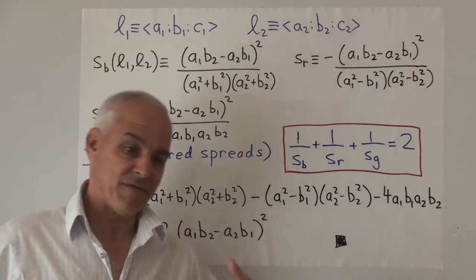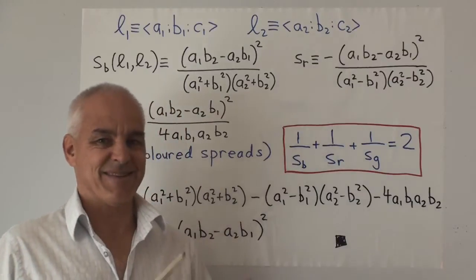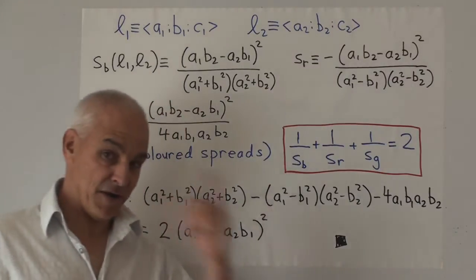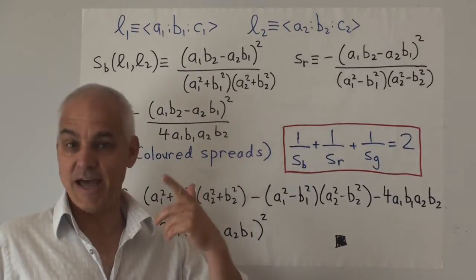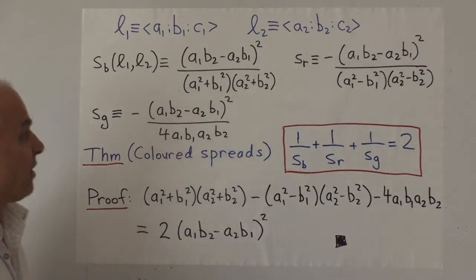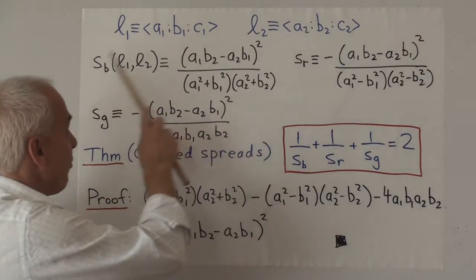Angles also do not work very well in relativistic settings. You can try to force them to work but it just doesn't really ring true, and the reason is because angles are not the right notion. The right notion is that of a spread. And here are the three spreads between these two lines: first the familiar blue spread.